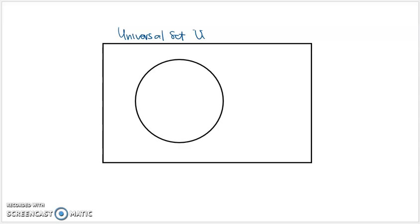So in this case, I'm an animal lover, so say that the universal set represents the set of all animals. The circle within the set is a subset, so it represents some subset of animals. For example, I'm a dog lover — suppose this set, which we'll call D, is the set of all dogs.